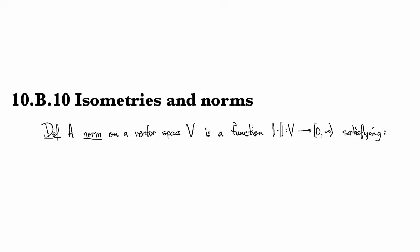First off it needs to be positive homogeneous, so if you have a scalar multiple of V by some scalar lambda, then you need to be able to pull that out in absolute values.